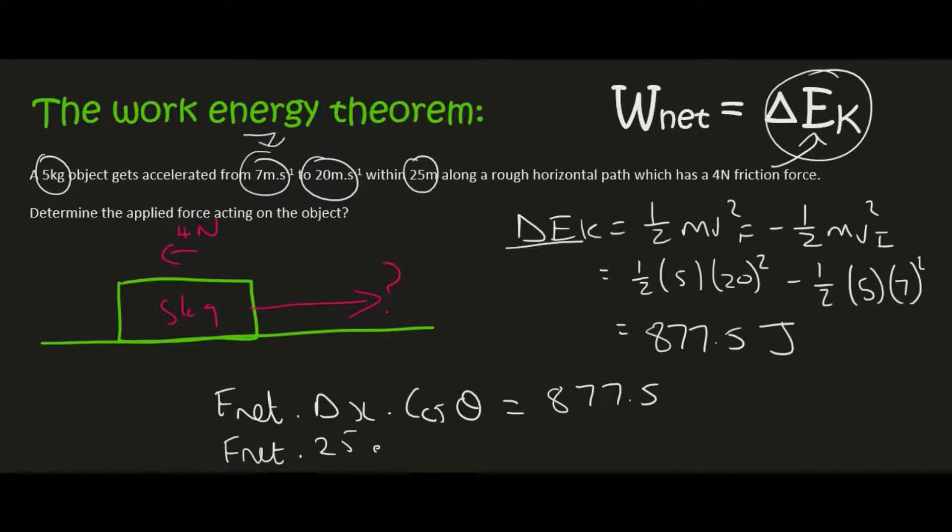And F_net, so because this object is going from 7 to 20, F_net is obviously going to be moving in the same direction as the motion. Otherwise the object would slow down. And so that's going to be cos of 0.